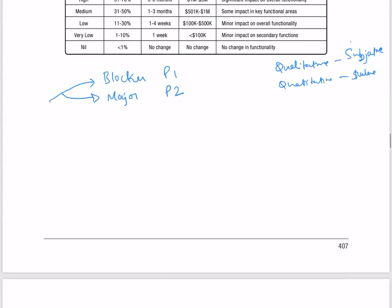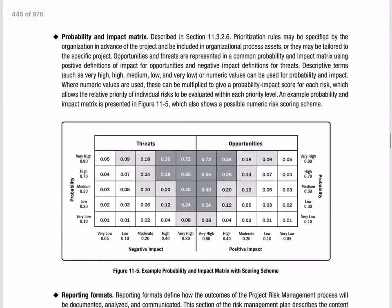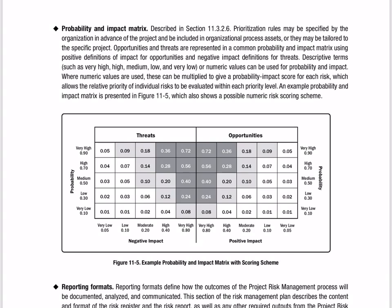I'll show you one more table — let's scroll down. The probability and impacts matrix. So you see here, risks with opportunities and threats — you can put a table like this and see those risks. For opportunities, very high: the probability value is 0.9 and the impact is 0.8. So the probability impact is the product of probability and impact — 0.9 times 0.8 equals 0.72 — and this is a high opportunity risk.